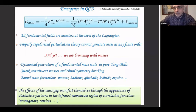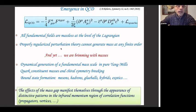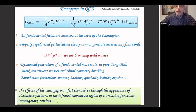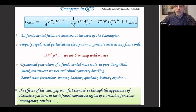The basic observations are well known: all fundamental fields are massless at the level of the Lagrangian, and if you have a properly regularized perturbation theory you cannot generate a mass at any finite order. Nevertheless, we believe there is a dynamical generation of a fundamental mass scale in pure Yang-Mills. If you let it be QCD and add the quarks, then you have the quark constituent masses, chiral symmetry breaking, and the entire zoo of particles — mesons, hadrons, glueballs, hybrids, exotics, and so on.